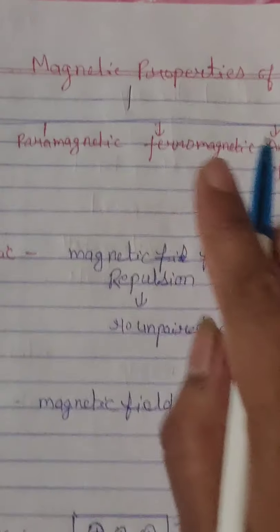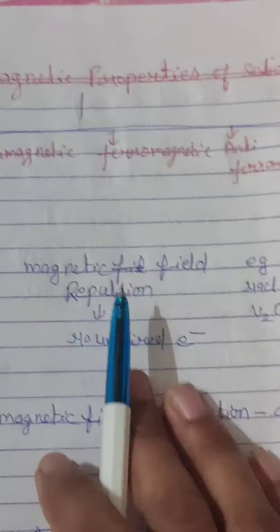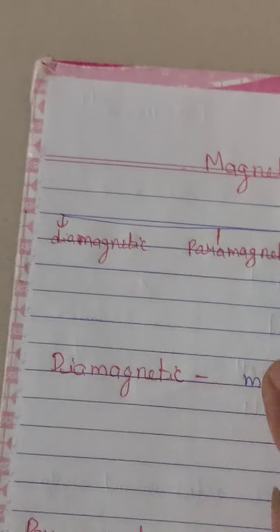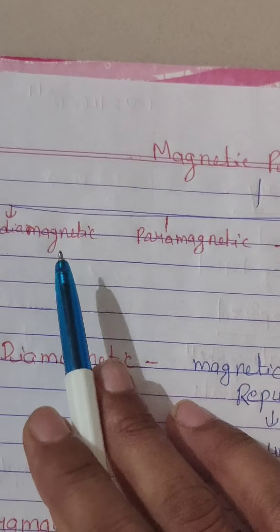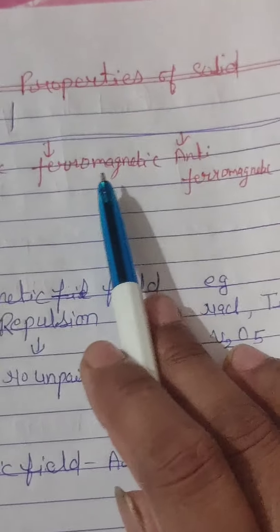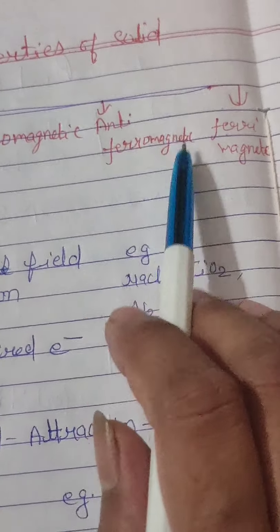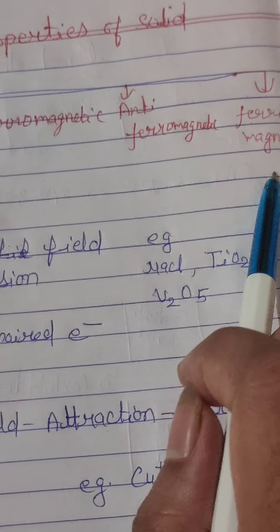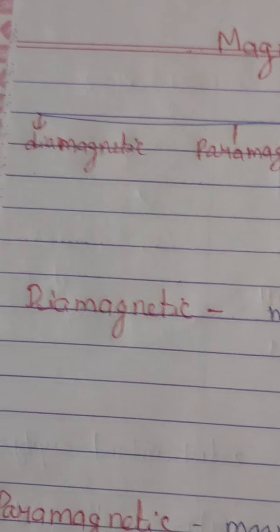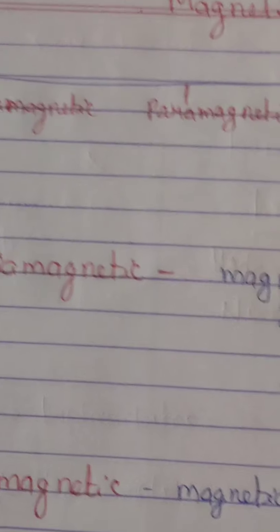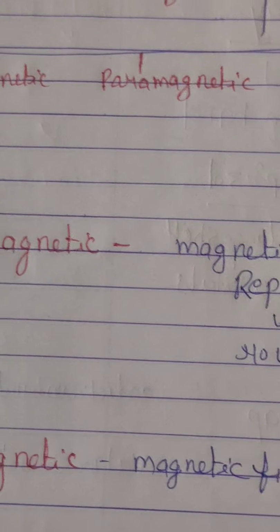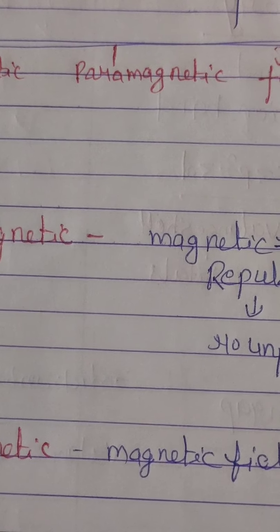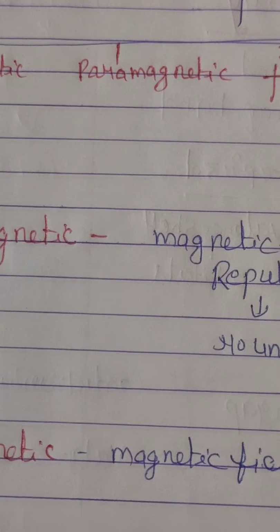Next are the magnetic properties of solids. Solids can be divided into five types based on magnetic properties: first is diamagnetic, second is paramagnetic, third is ferromagnetic, fourth is anti-ferromagnetic, and fifth is ferrimagnetic. Paramagnetic means a material that has at least one unpaired electron. Examples of paramagnetic materials are Cu²⁺, Fe³⁺, and TiO.